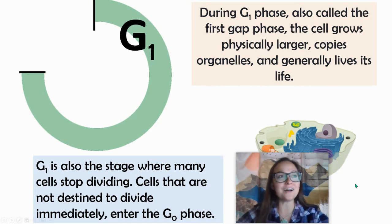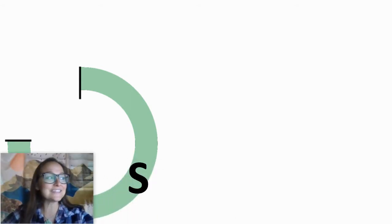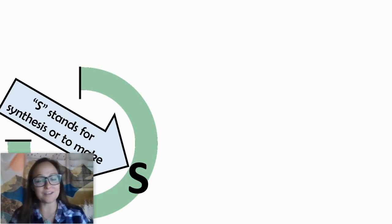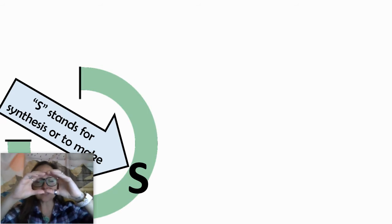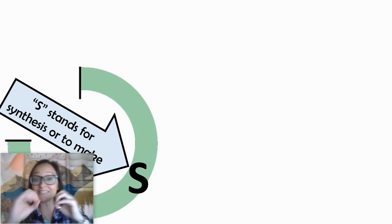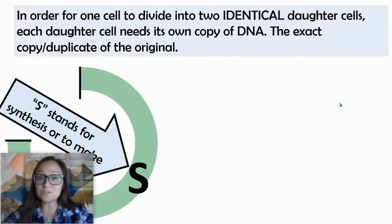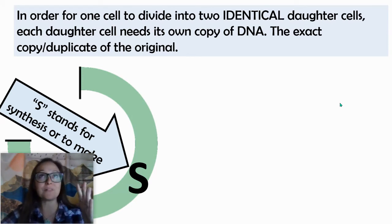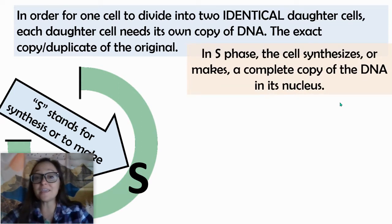So now let's go ahead and move on to S phase. In S phase, the S stands for synthesis, which means to make. So we're making something here in S phase. We want to think: if we're starting with one cell and dividing into two, we need to make two identical daughter cells. So we have to think about what is in the parent cell that we have to copy or make so each daughter cell is an exact replica of the parent. In order for this one cell to become two identical daughter cells, they each need their own copy of DNA. So that DNA has to be an exact replica of the original. In S phase, that S stands for synthesize, or to make more DNA.